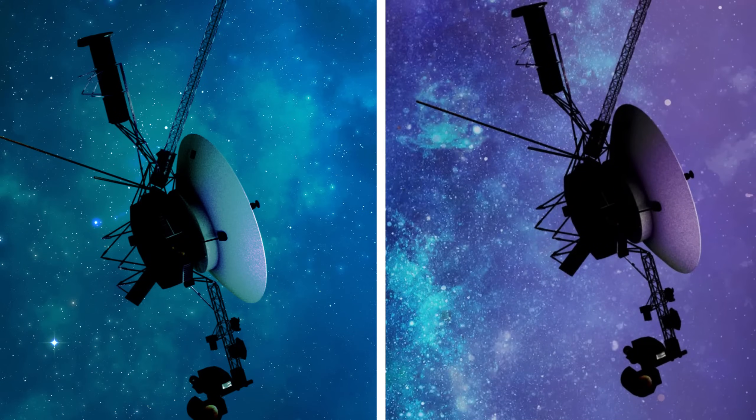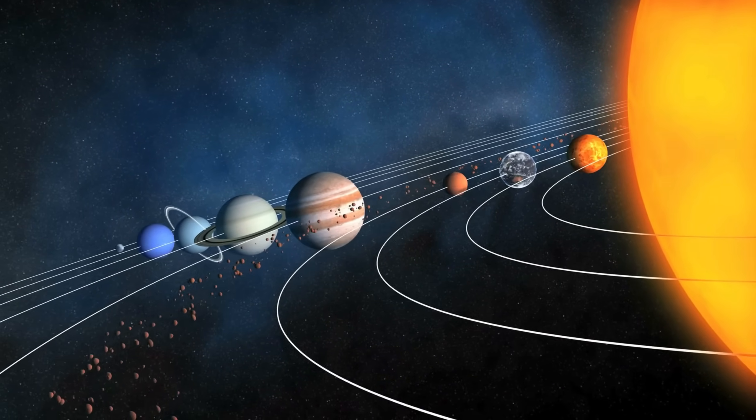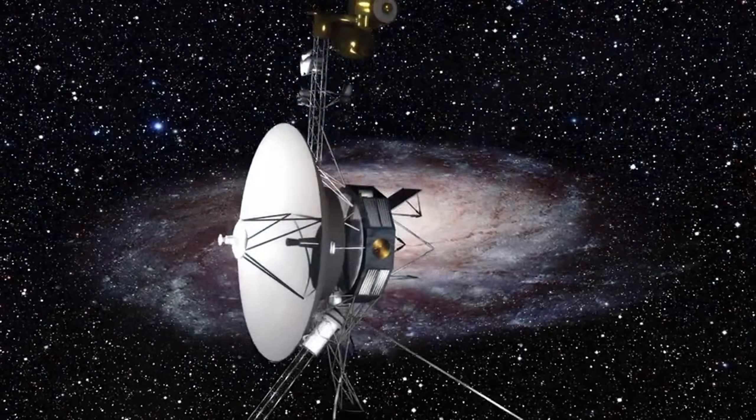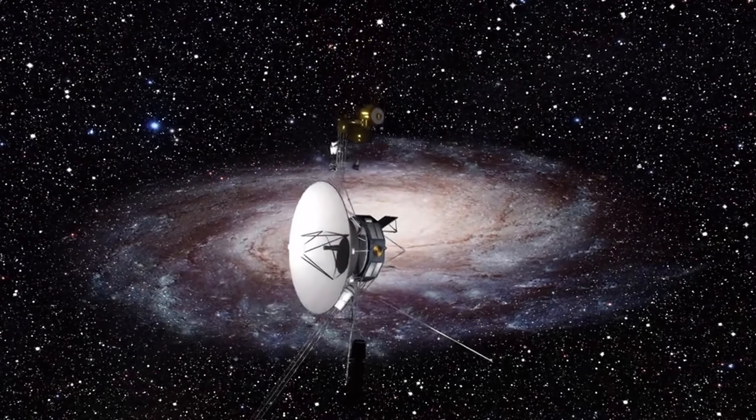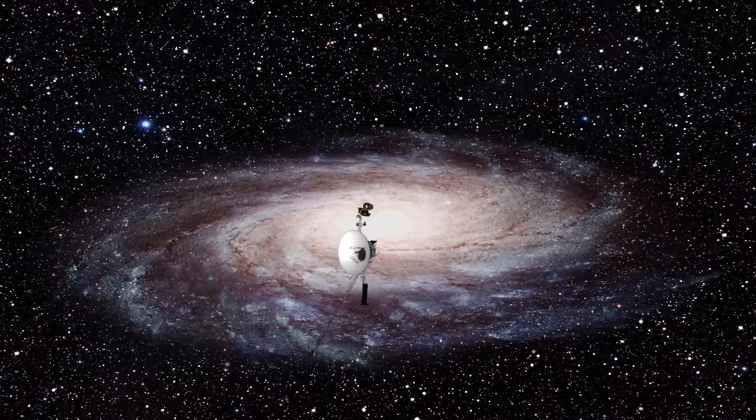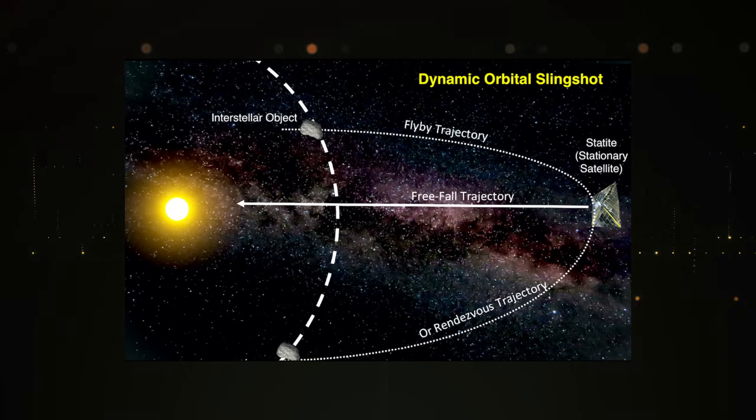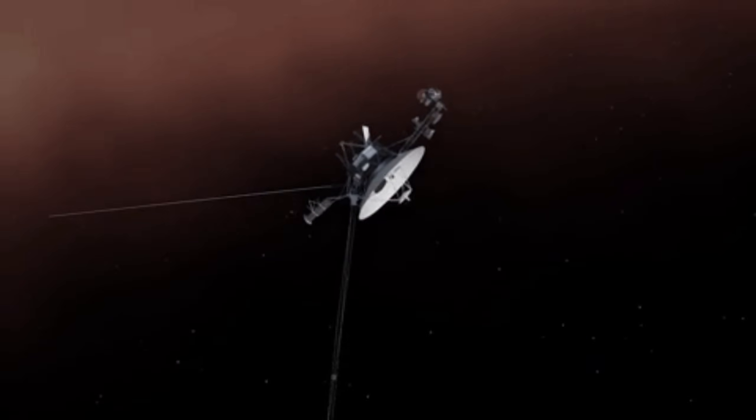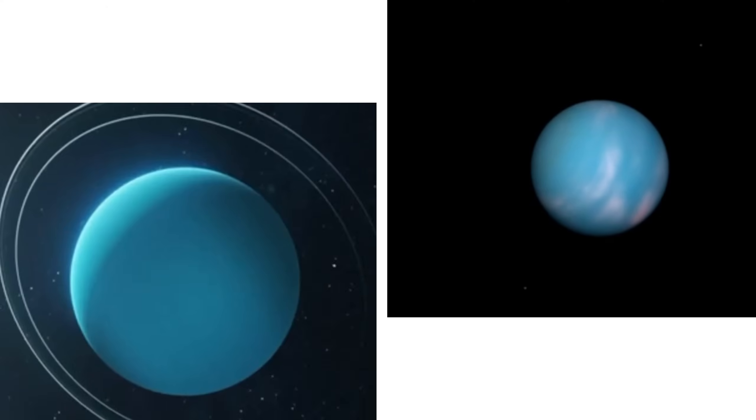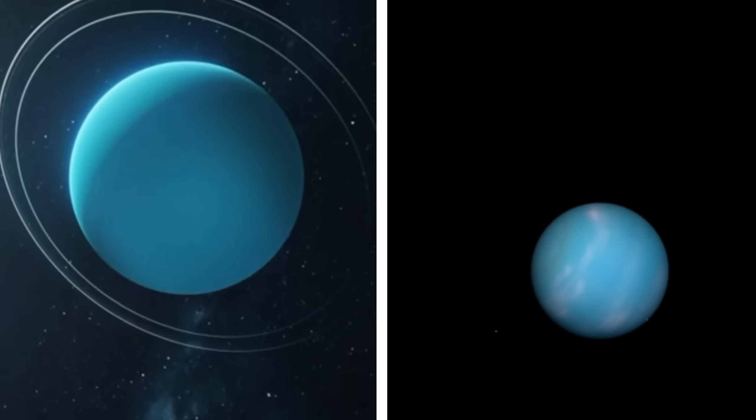Launched in 1977, the Voyager mission consists of two twin spacecraft, Voyager 1 and Voyager 2, designed to explore the outer planets of our solar system and eventually enter interstellar space. Originally intended to perform a grand tour of the outer planets, both probes exceeded their initial goals by journeying past their intended paths and continuing on an interstellar trajectory. Voyager 1 holds the title of the farthest human-made object from Earth, while Voyager 2 followed a distinctive path that enabled it to visit both Uranus and Neptune.